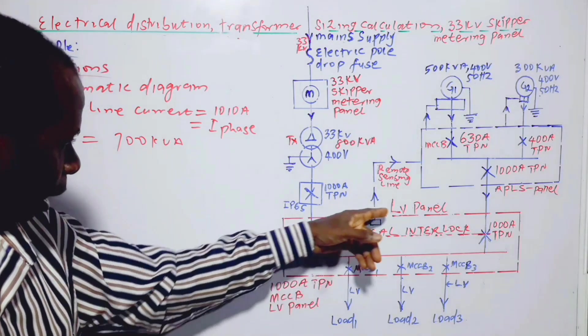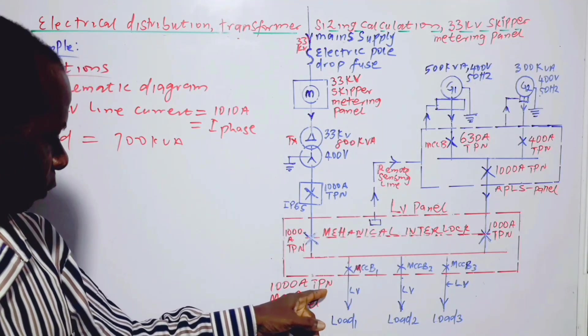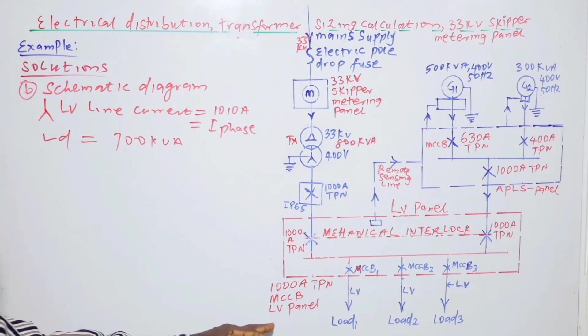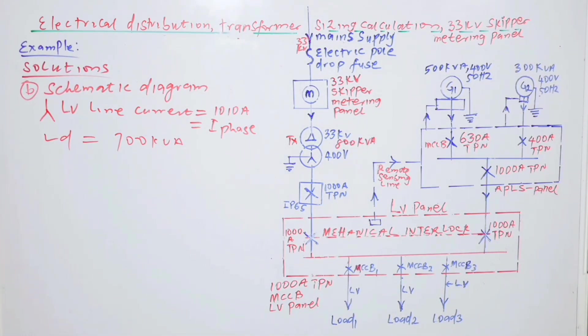This is the LV panel, 1000 ampere triple phase with neutral MCCB, low-voltage panel. And that is the schematic diagram for the system.